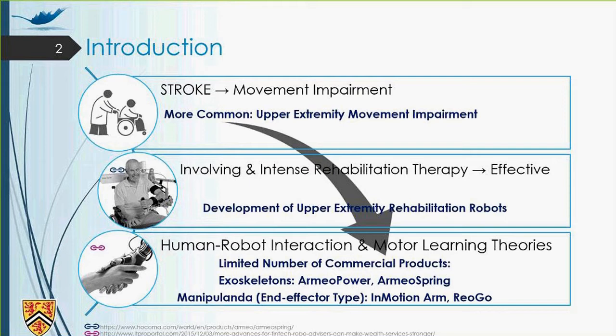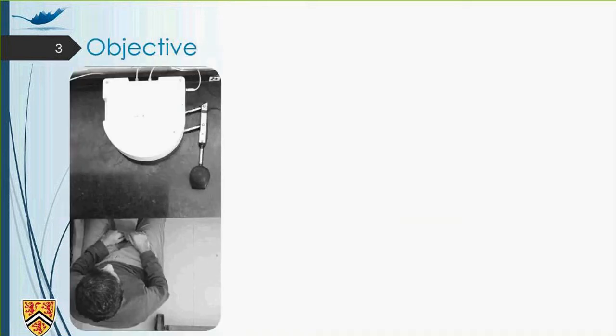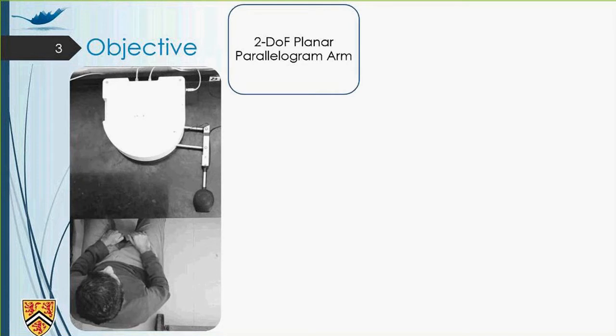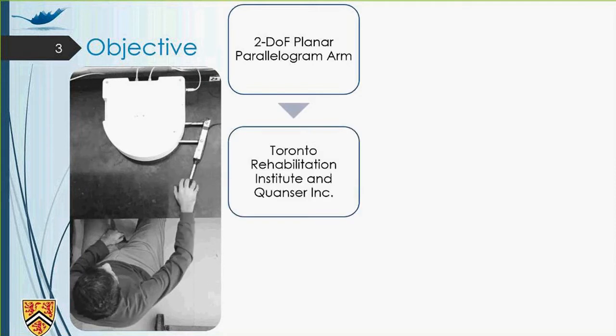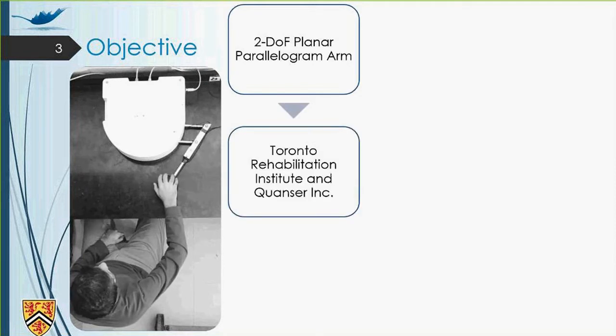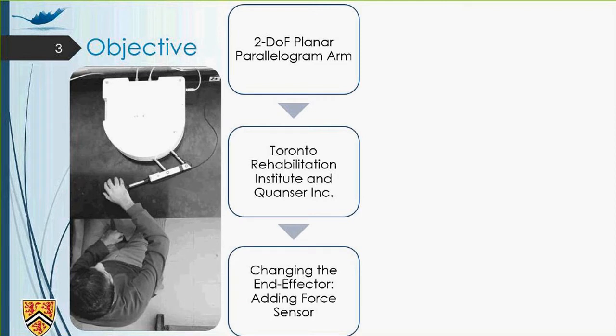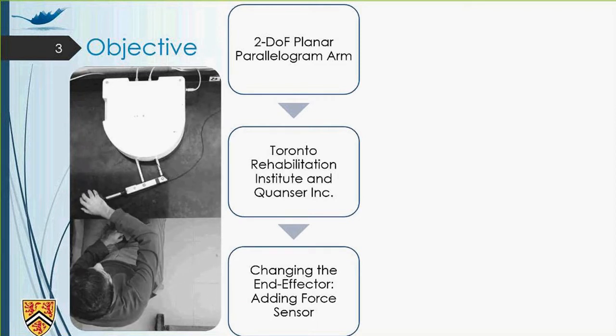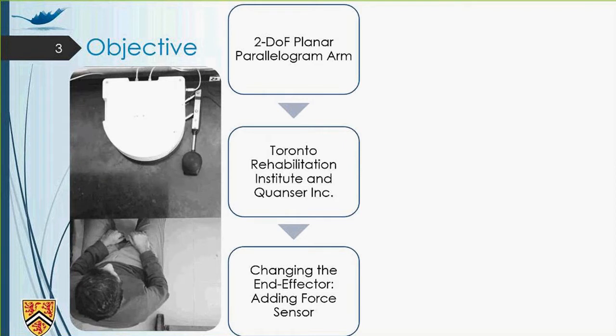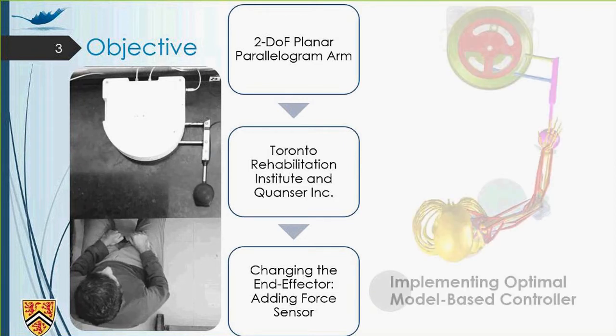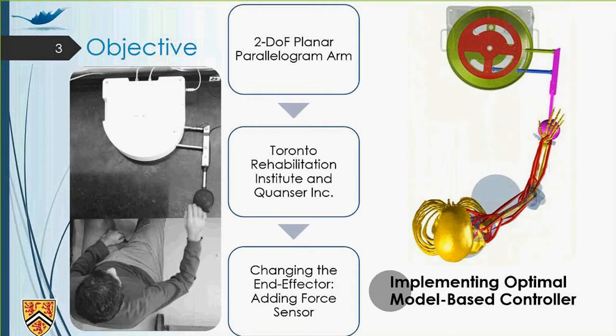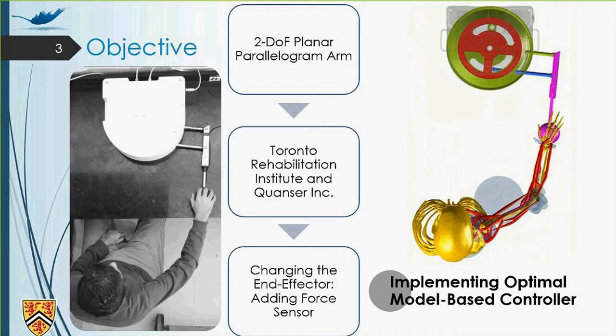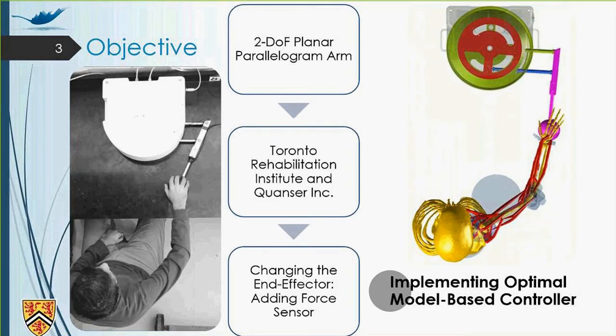Now, with this introduction, let's see what's the objective of this project. We got this 2D parallelogram arm, which is an upper extremity rehabilitation robot from Toronto Rehabilitation Institute and the Kronzer Incorporation. We changed the end-effector of the robot. We added a force sensor to the end-effector of the robot to capture the interaction force between the human and the robot. But what's the goal of this project? The goal is to optimally control this rehabilitation system with modeling human as a musculoskeletal system and capturing the dynamics of the human and robot interaction.